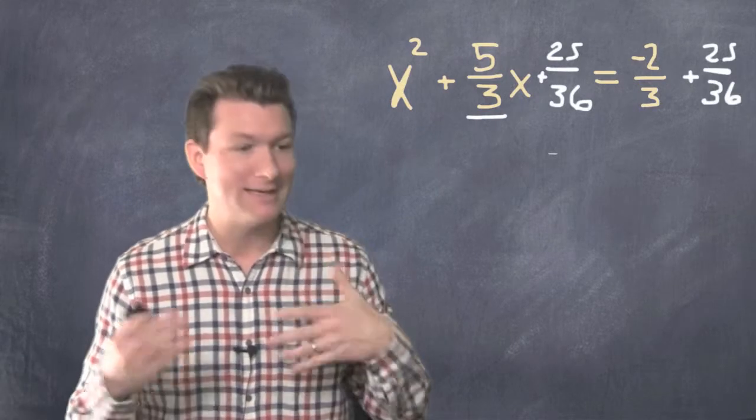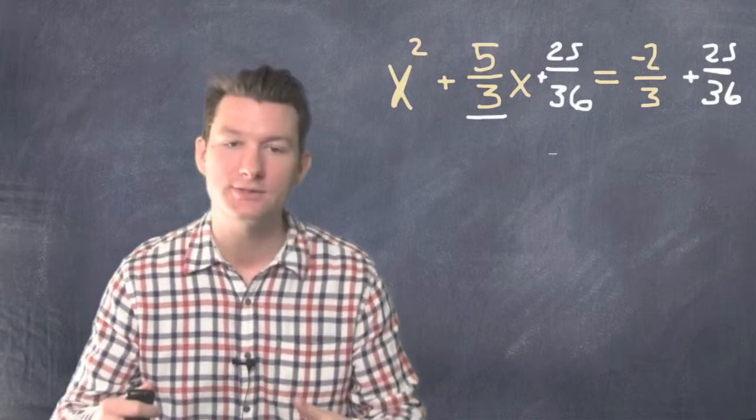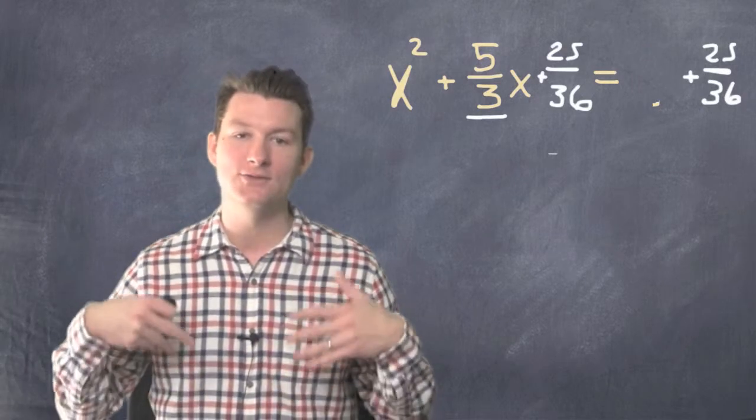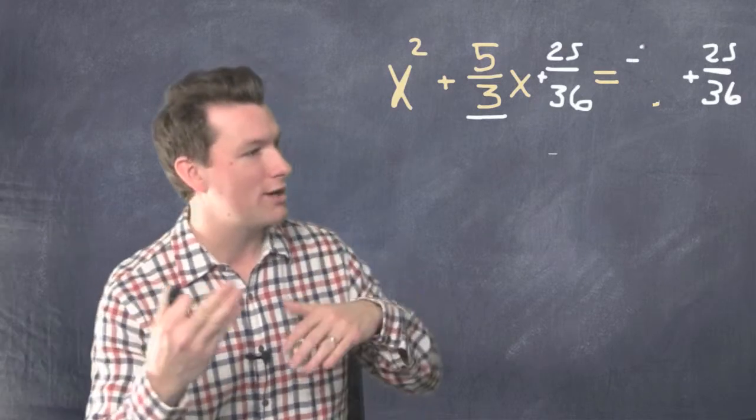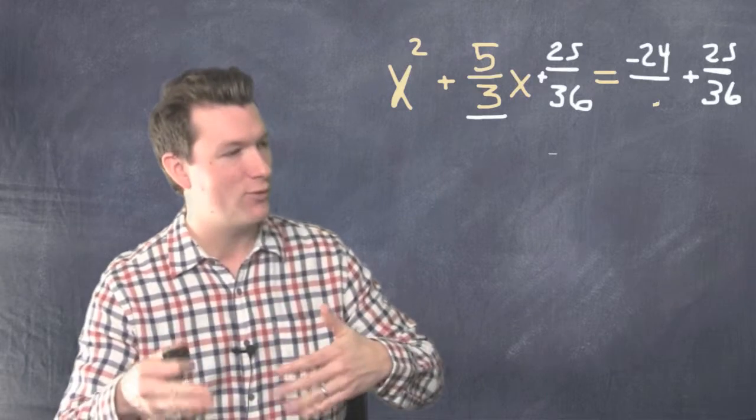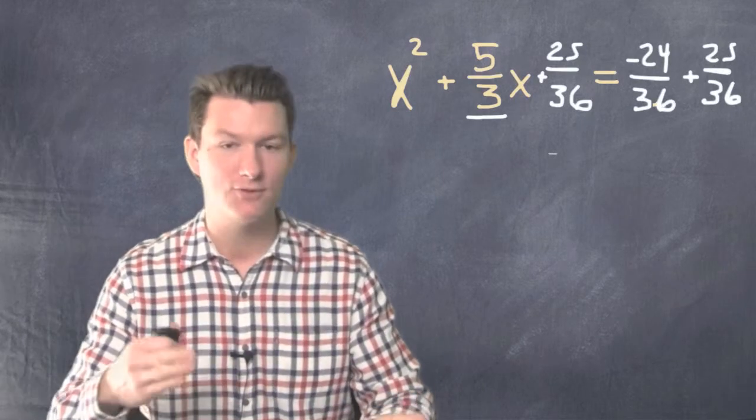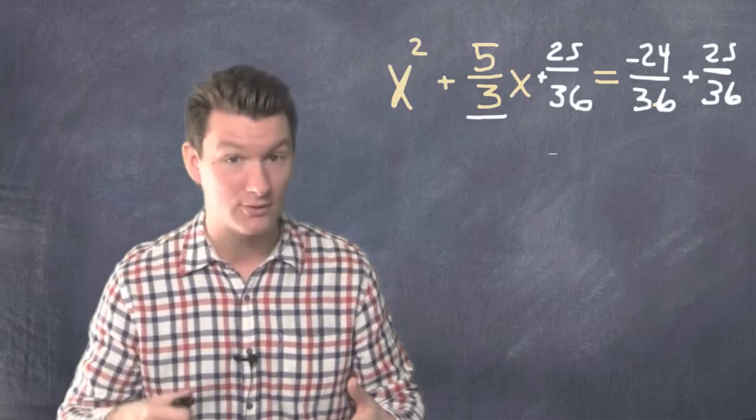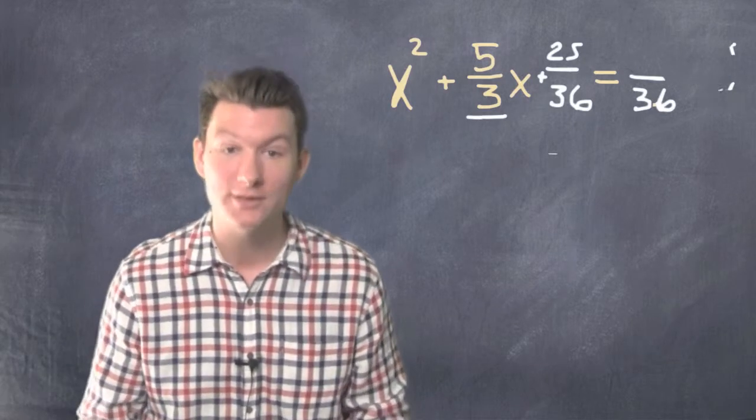This is going to take some common denominator stuff, but negative 2 thirds is the same thing as negative 24 over 36. So negative 24 over 36 plus 25 over 36 is just 1 over 36.